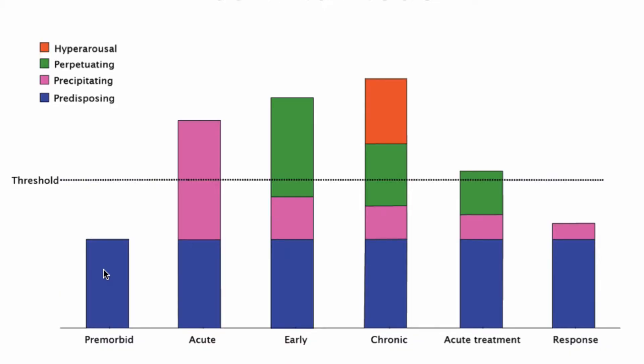In understanding insomnia and its components, I find this model very helpful both to explain to people with insomnia the different parts we need to tackle, and when talking with health professionals about the different aspects of treatment we need to consider. This model was first conceptualised by Art Spielman in the 1980s and has really stood the test of time in our thinking about insomnia.